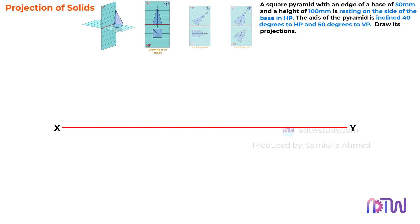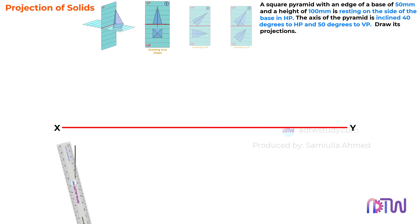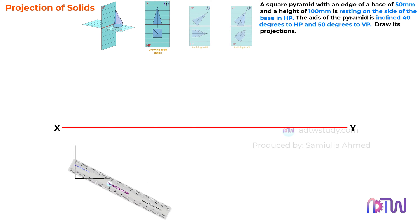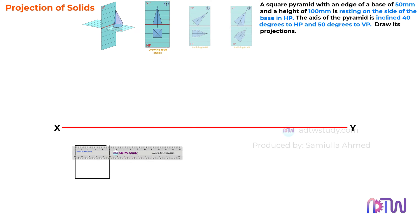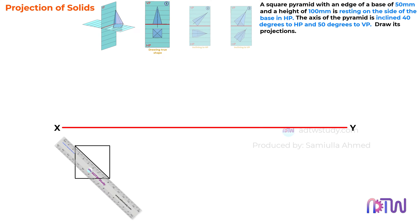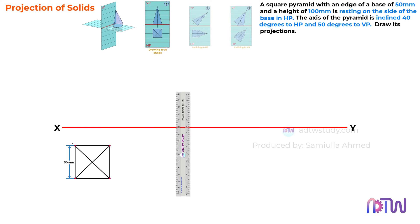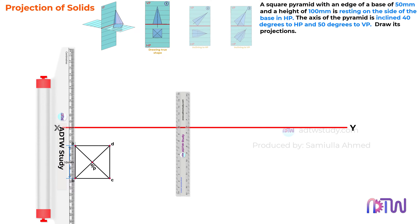Let's kick off with Step 1: constructing the true shape of the pyramid. We'll begin with the top view of the pyramid. Grab your ruler and sketch a square with sides measuring 50 millimeters. Let's label the corners of the base as A, B, C, and D. Our apex point will be denoted as O slash P. Next, onto drawing the front view — project lines from the corners of the base and the center point.